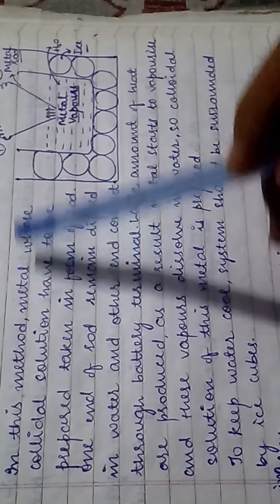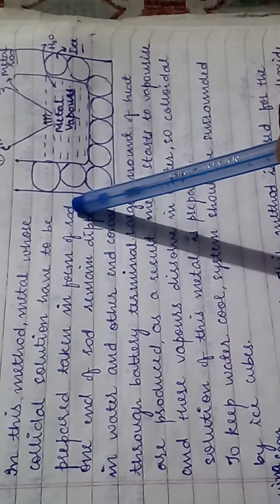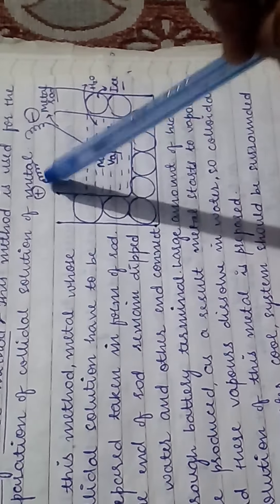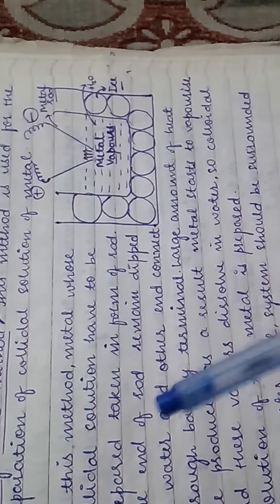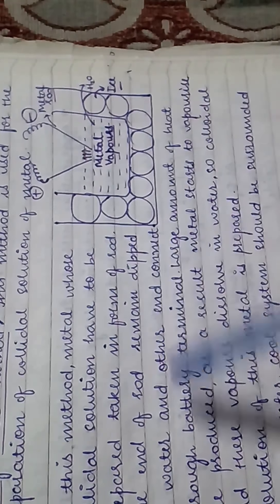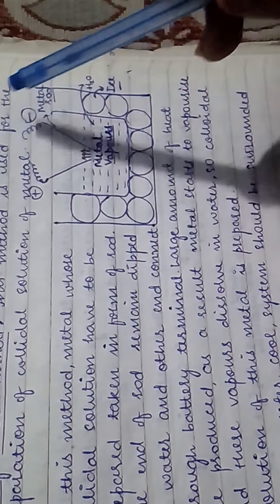The second method is the electrical disintegration or Bredig's arc method, used to prepare colloidal solution of metals. The metal whose colloidal solution has to be prepared is taken in the form of a rod. One end of the rod is dipped in water and the other end is connected to a battery terminal.